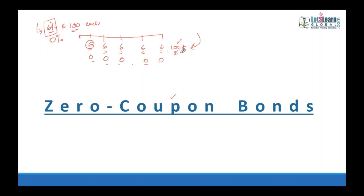A regular discount is like $98 or $97 — a $2 or $3 discount on a $100 face value bond. A zero coupon bond is issued at deep discount, say $72. You pay $72 to become a bondholder and receive the full $100 at the end of five years — nothing is paid during the interim years.